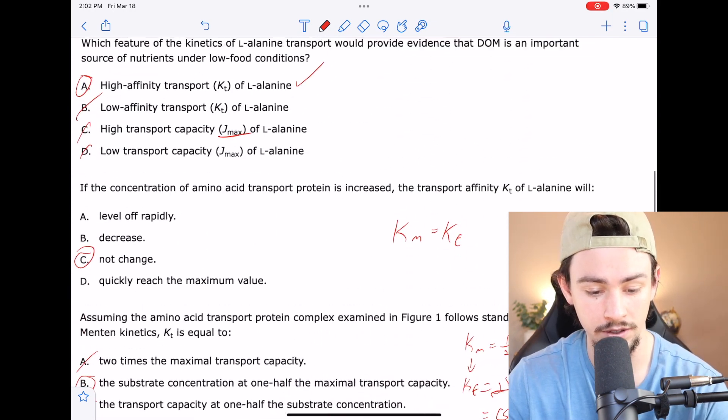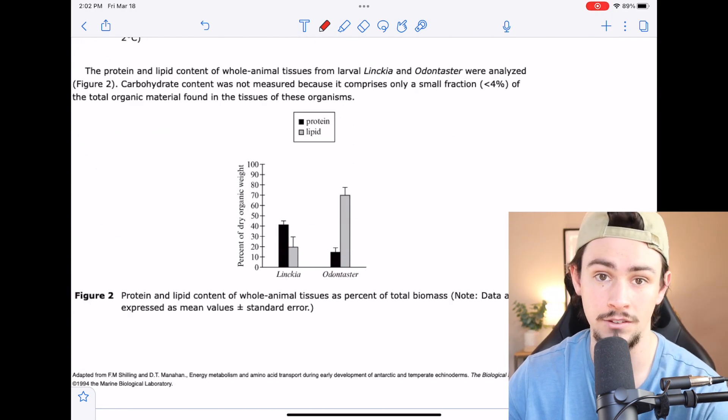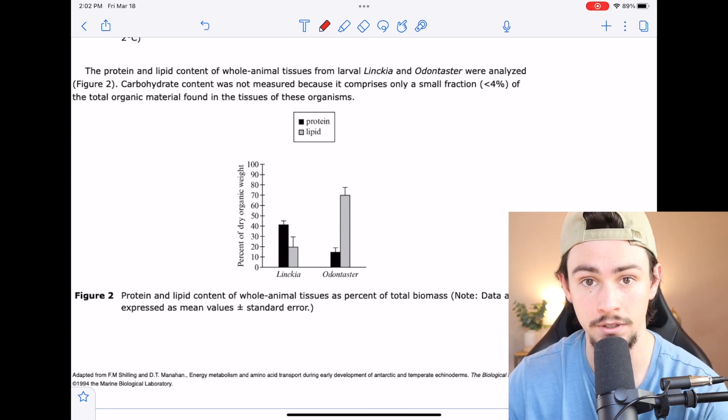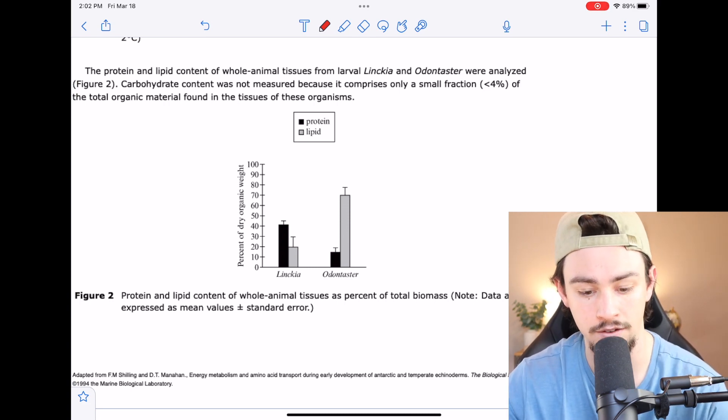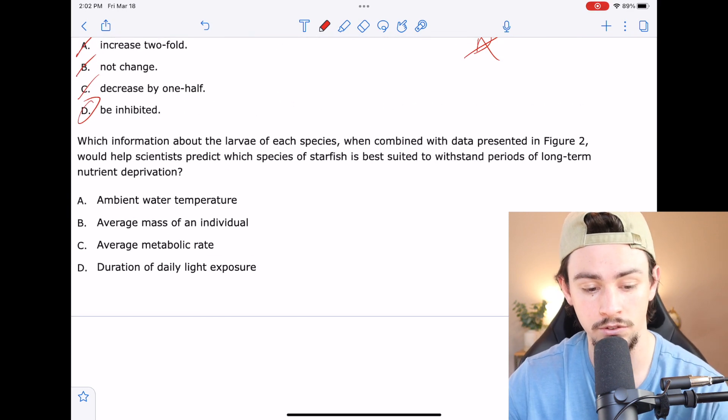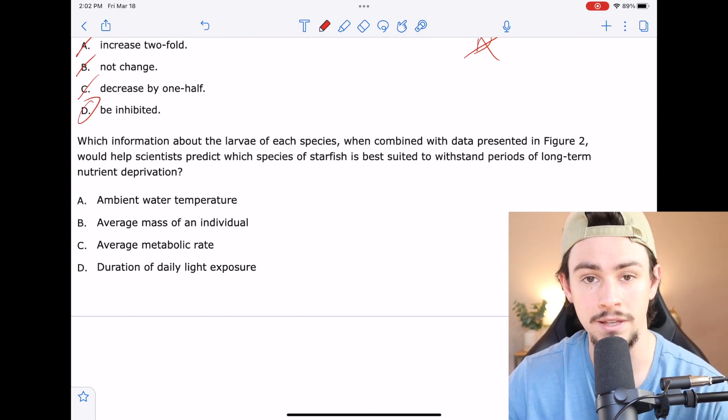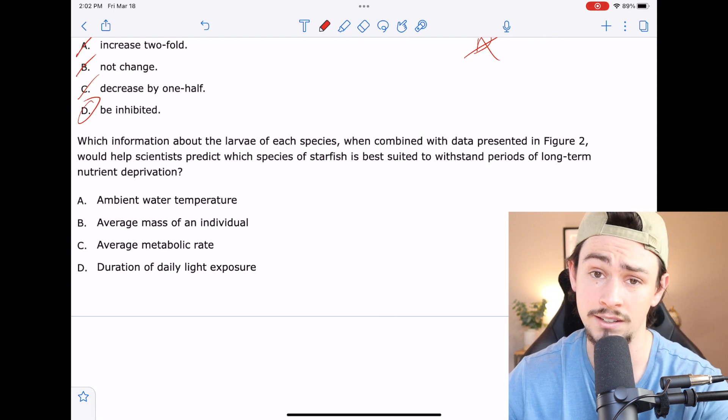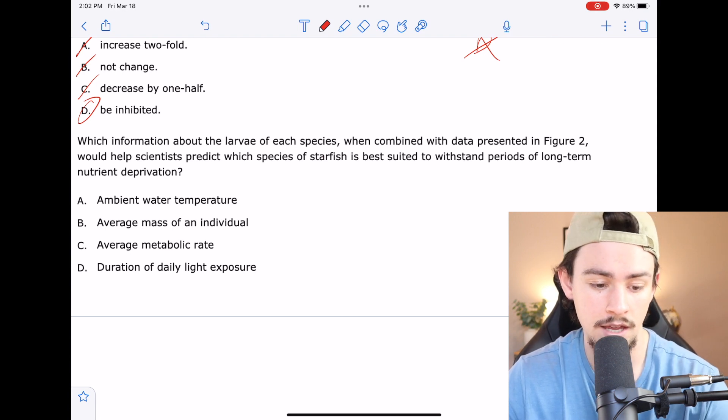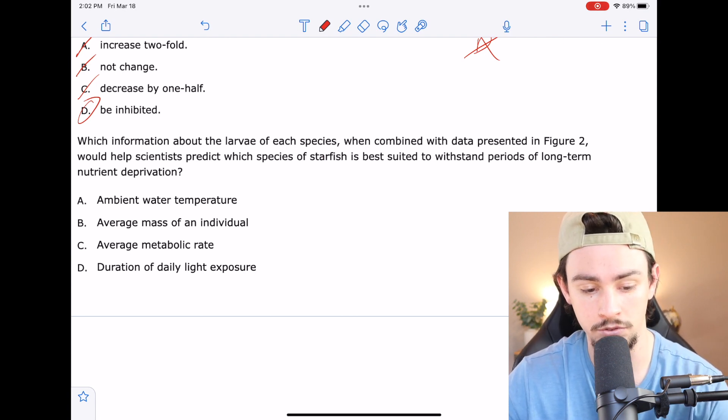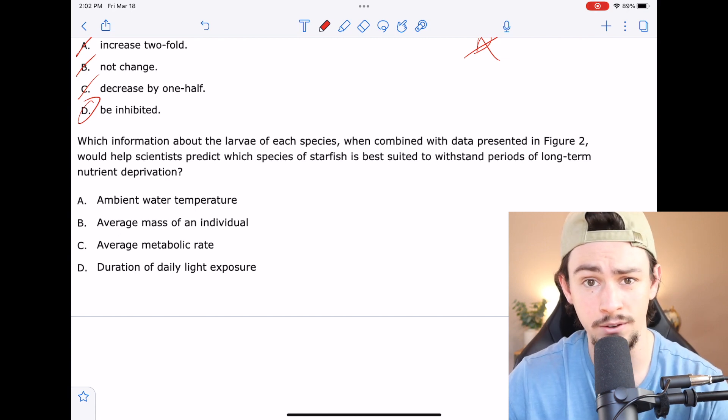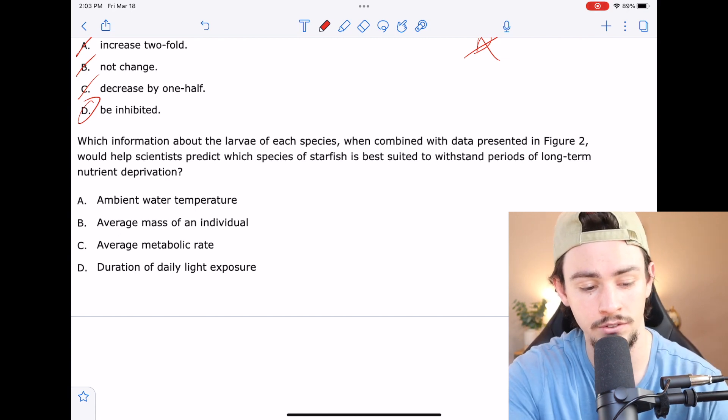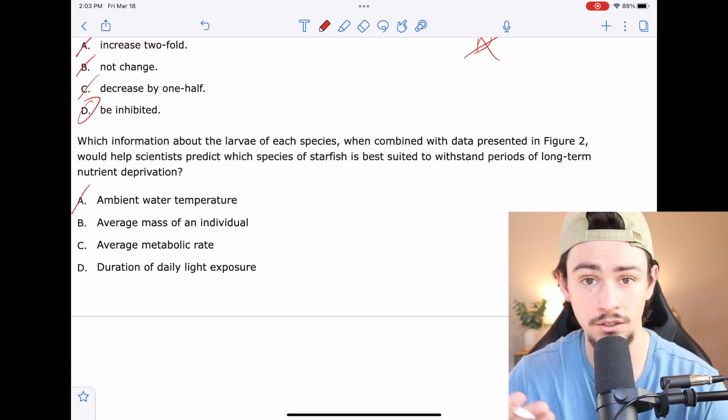Data in figure two tells us how much of our mass is made of proteins or lipids, which is basically telling us the available calorie source that we have. So if we know the available calorie source that we have, which of these would be helpful in telling us how long it's going to take us to use that calorie source? So A is ambient water temperature. No, the temperature of the water is not going to be able to tell you how quickly you're going to use those calories. So I'd say maybe not A.